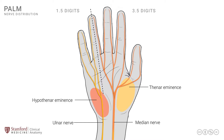There are some anatomical variations, where a little larger area may be supplied by the median nerve, or the same may be true with a little larger area being supplied by the ulnar nerve. There is also a small part at the base of the thumb that is innervated by the radial nerve. Much larger portions of the dorsum of the hand are supplied by the radial nerve, but there is often a small part that creeps onto the palmar side in the base of the thumb area.